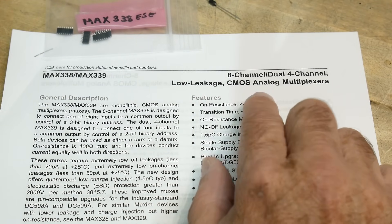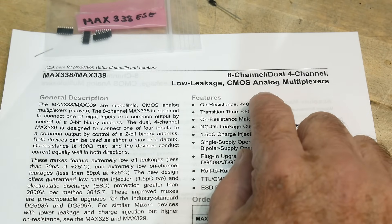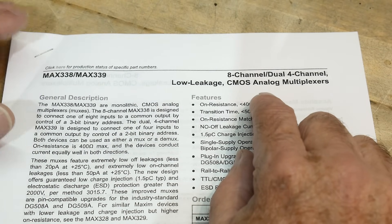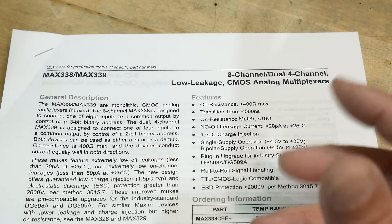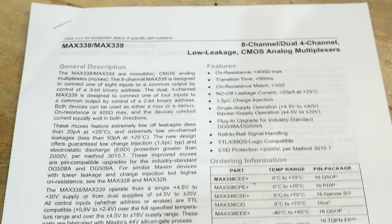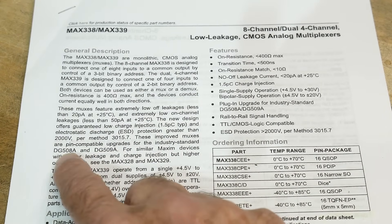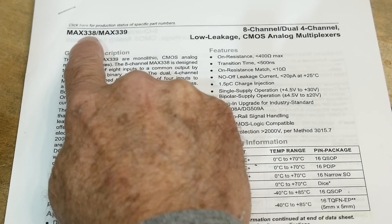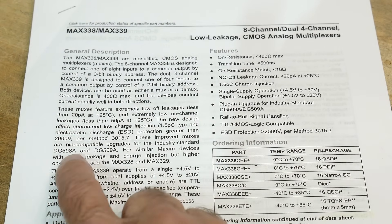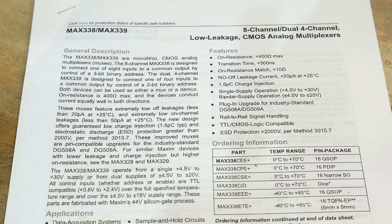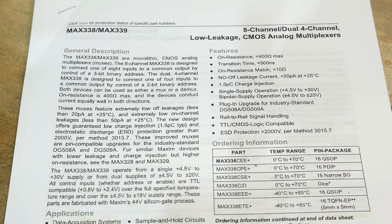Well, it's an 8-channel low leakage CMOS analog multiplexer. Now, I did a video on multiplexers before, and there's a whole bunch of standard multiplexers and analog switches and stuff in the DG series. This claims it is a direct replacement for the DG508 and 509, depending if it's a 338 or 339. So we have the 338, so we're a direct replacement for a DG508. It's just a better part with better specs, lower leakage, all that kind of stuff.